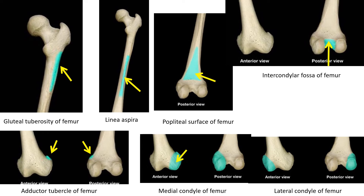At the lower end of the long bone there are two egg-shaped elevations called the condyles of the femur. Posteriorly between them there is a depression called the intercondylar fossa — visible only from the posterior view and not anteriorly.